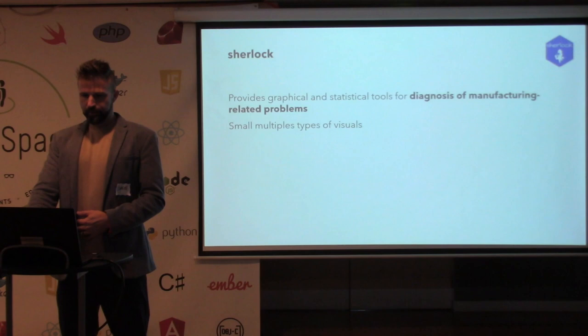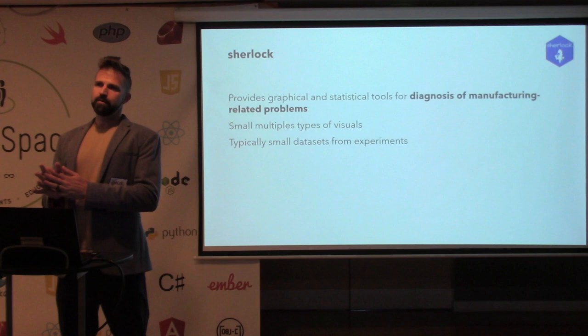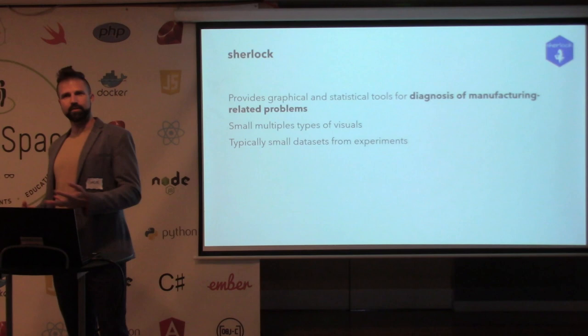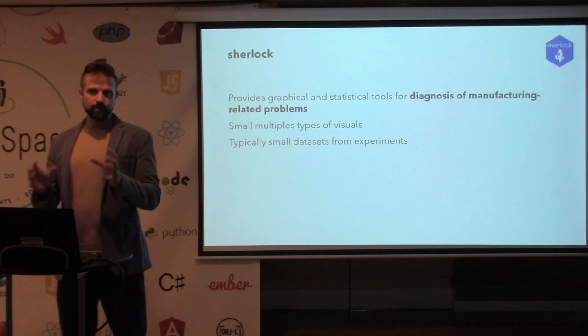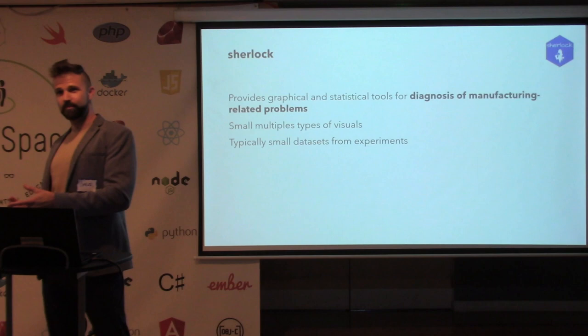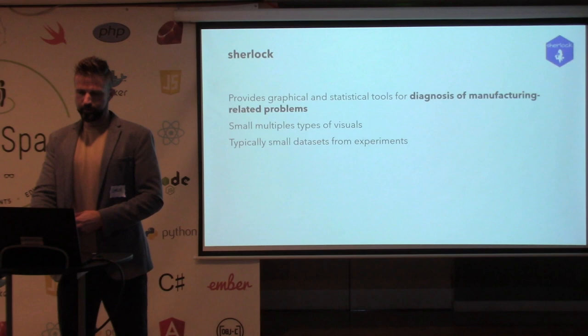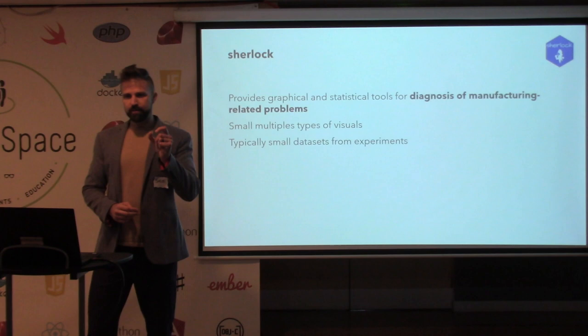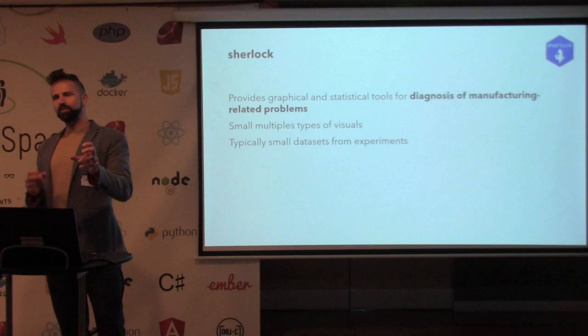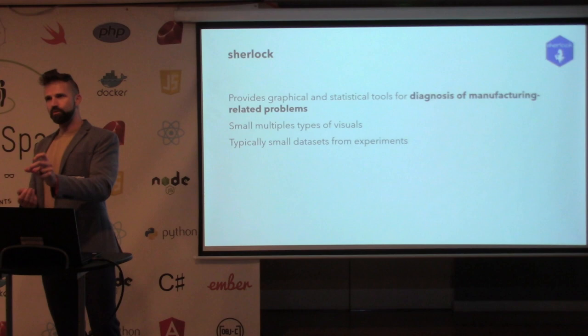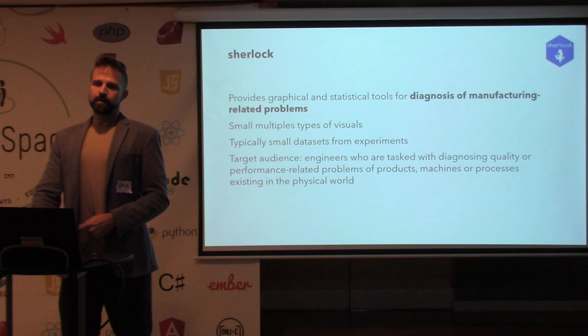The kind of data sets typically used for this kind of diagnosis are not the big-data type — not hundreds of thousands of observations. It's usually small data sets: say 30 or 50 observations, sometimes not even that many. Instead of dumping data into an application and looking for clues, we design those experiments specifically to get an answer.